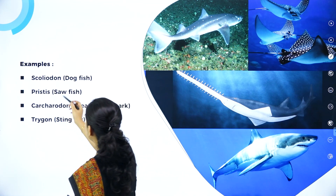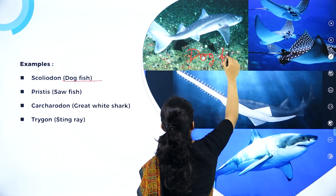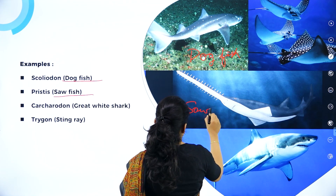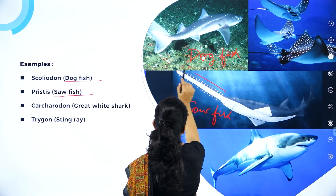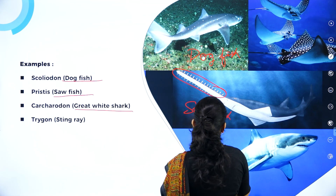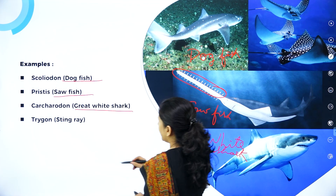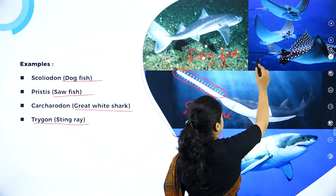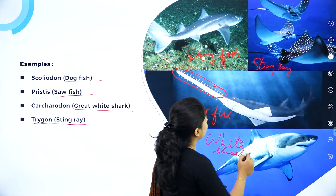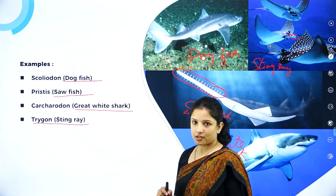Some examples of Chondrichthyes: Scoliodon, which is called dogfish; Pristis, which is called sawfish — its snout looks like a saw; Carcharodon, which is the white shark; and Trigon, which is the stingray. If you look carefully at the stingray, you can see the poison sting it has.